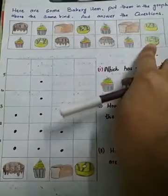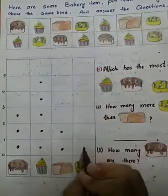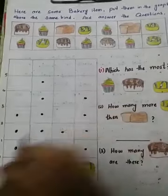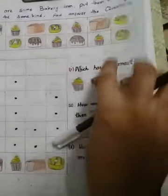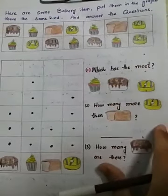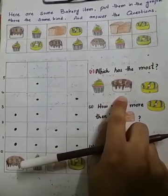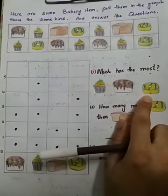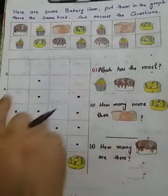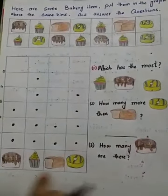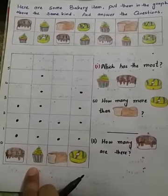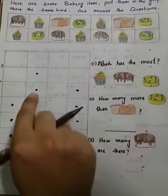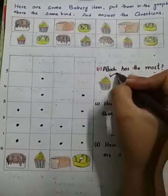How many doughnuts? One, two, three, four — color four blocks. Now answer the questions. Which bakery item has the most blocks? Is it the cupcake? Yes — cupcake has five blocks, which means cupcake has the most.